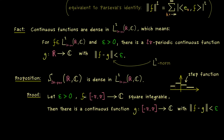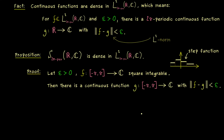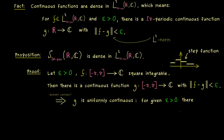We choose a continuous function g defined on the interval minus π to π such that the distance to f is less than epsilon. Since g is defined on a compact interval, it is also uniformly continuous — a stronger formulation of continuity. The epsilon-delta criterion works uniformly: for any given epsilon, you find a delta which works for every point in the interval. For every two points x and y closer than delta, the values are closer than epsilon.